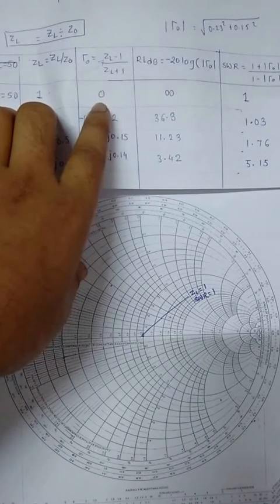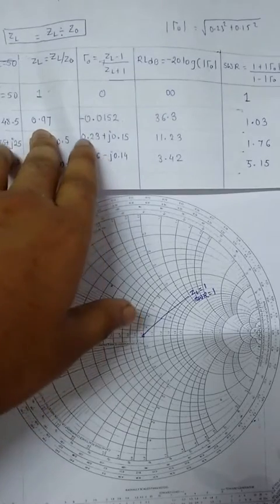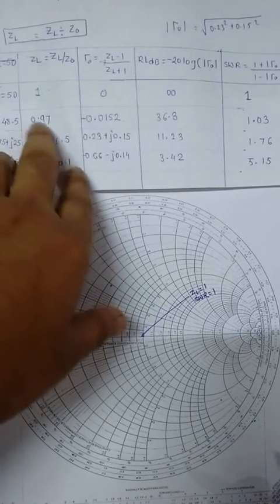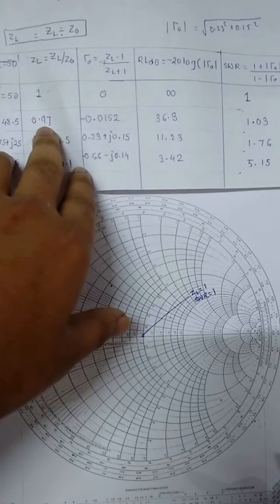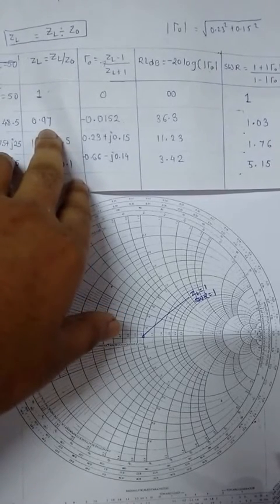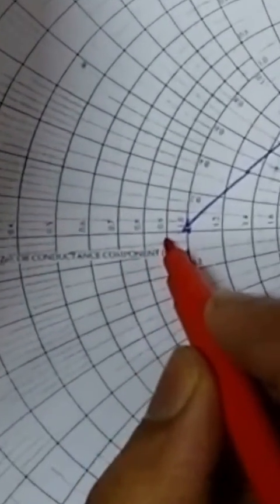After that, for the next result, ZL is equal to 48.5. We got normalized ZL equal to 0.97. So you can see here 0.8, 0.9, 0.95, and here 0.97.